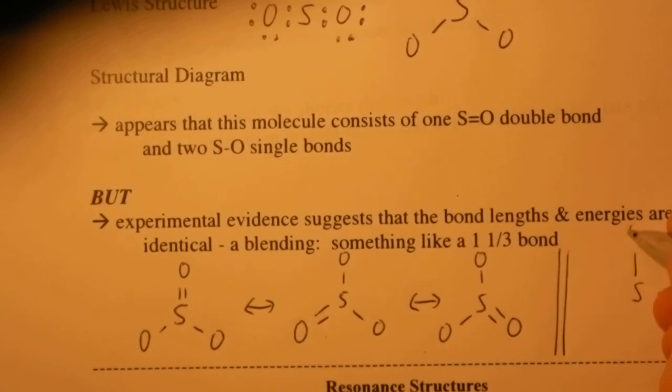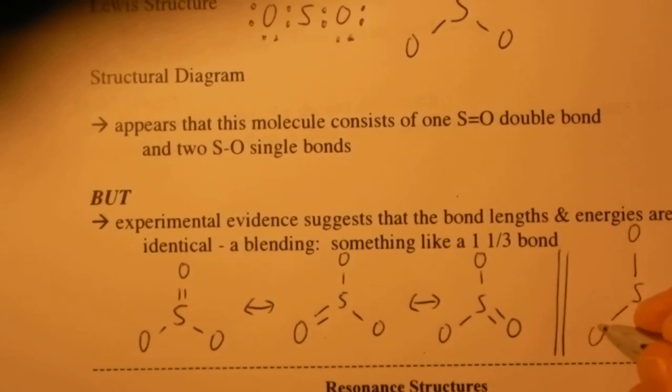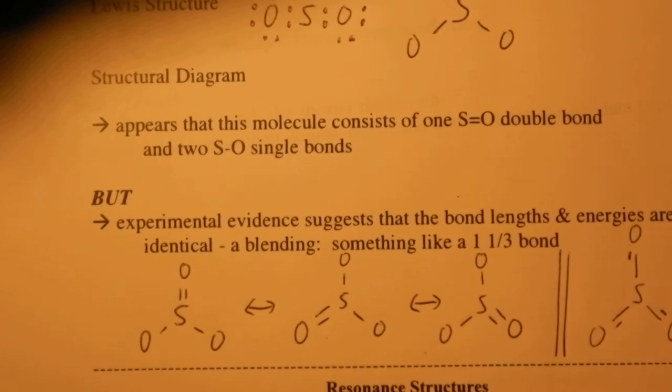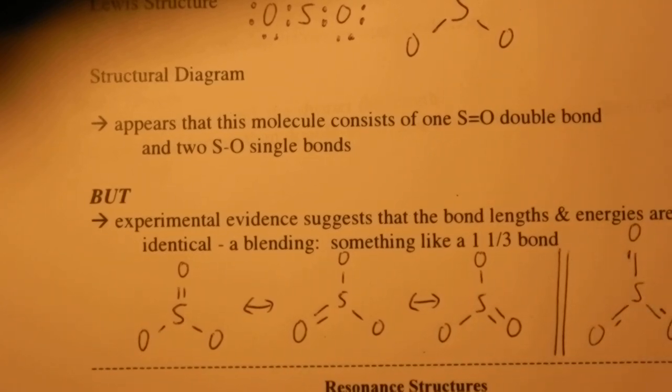Okay, that the bond is essentially one and a third. So this is representing a one and a third, one and a third, one and a third.